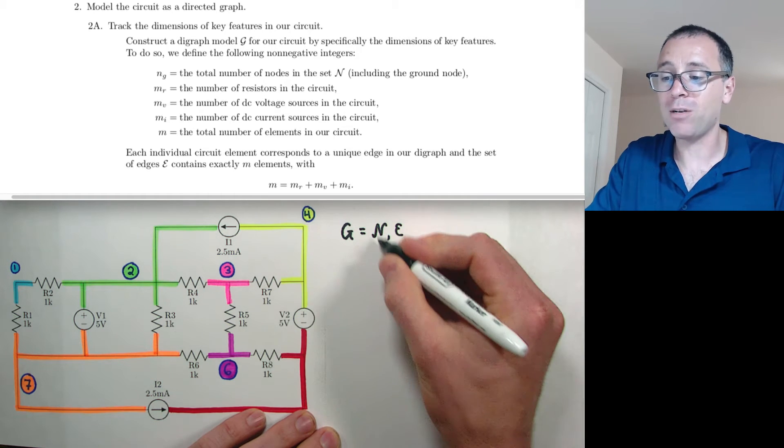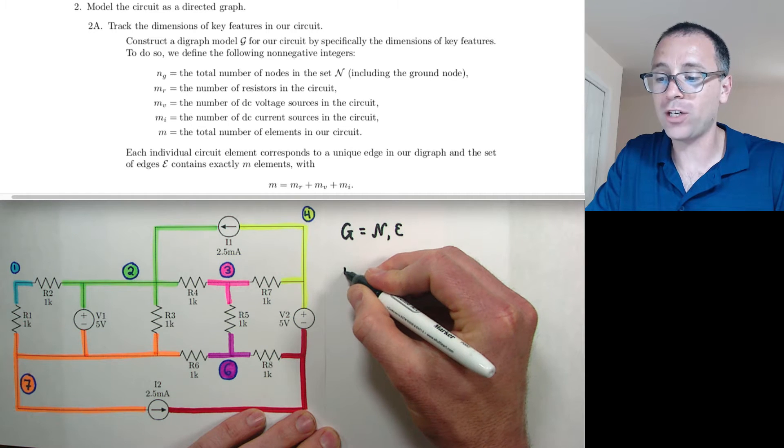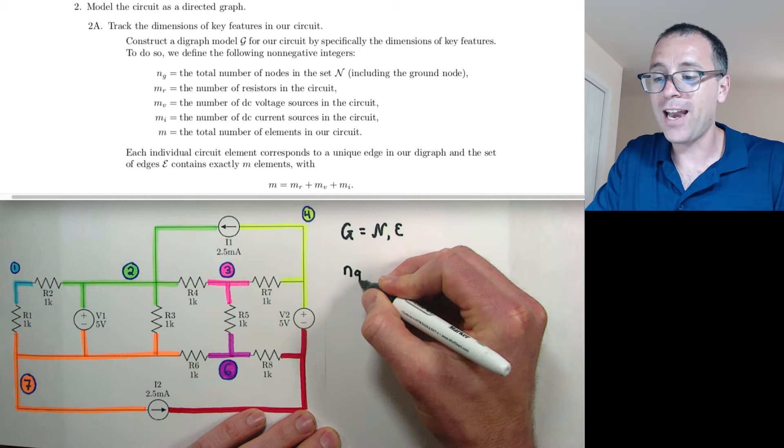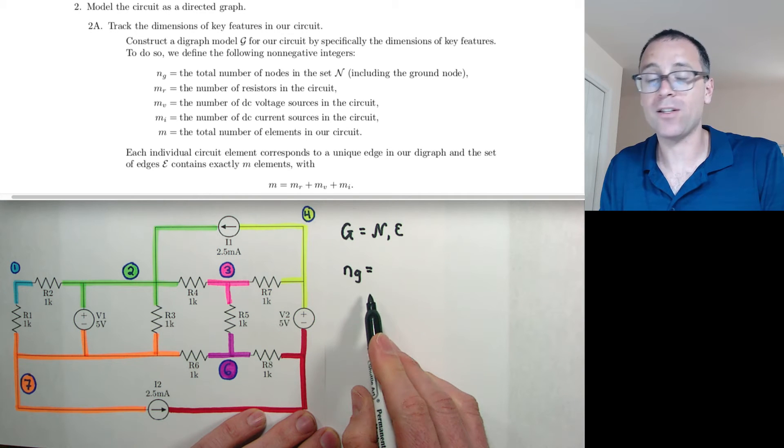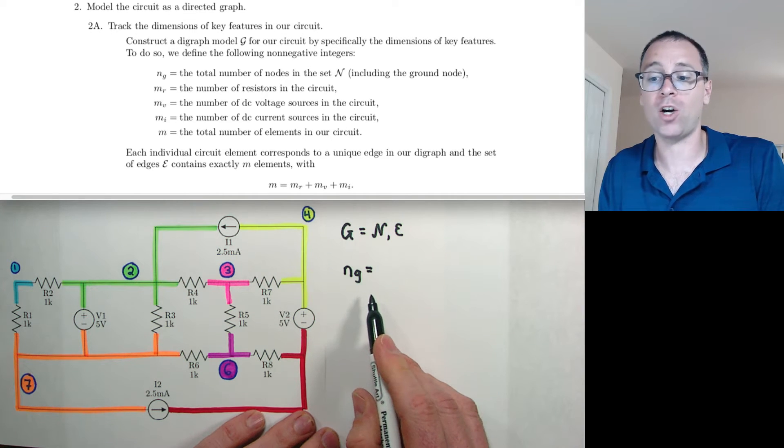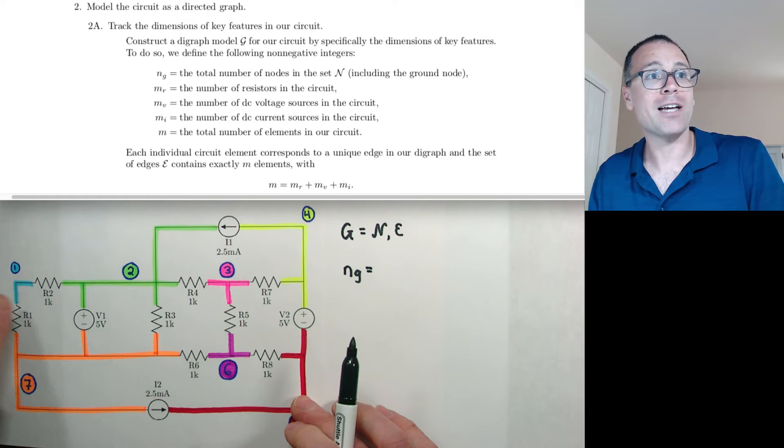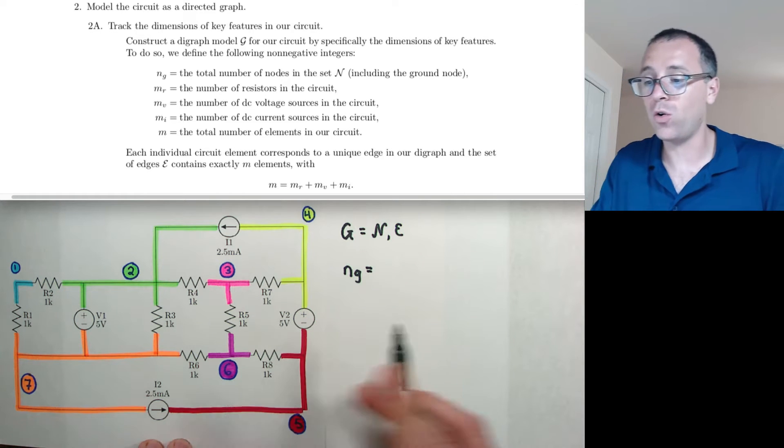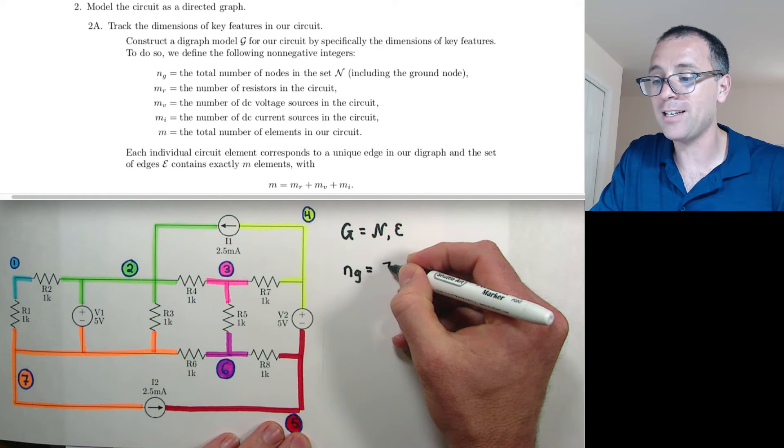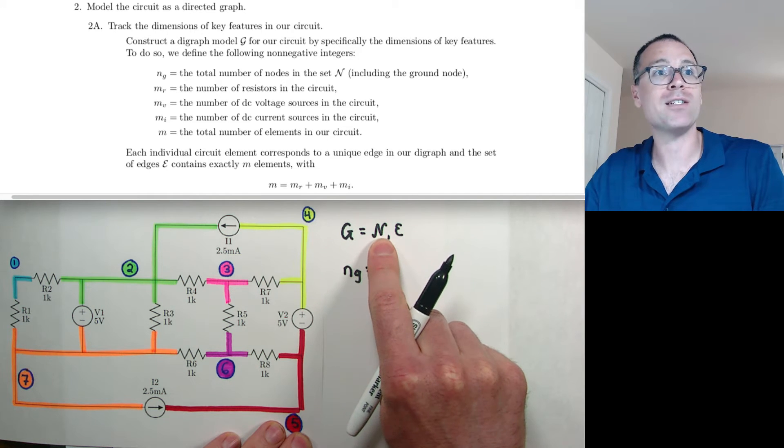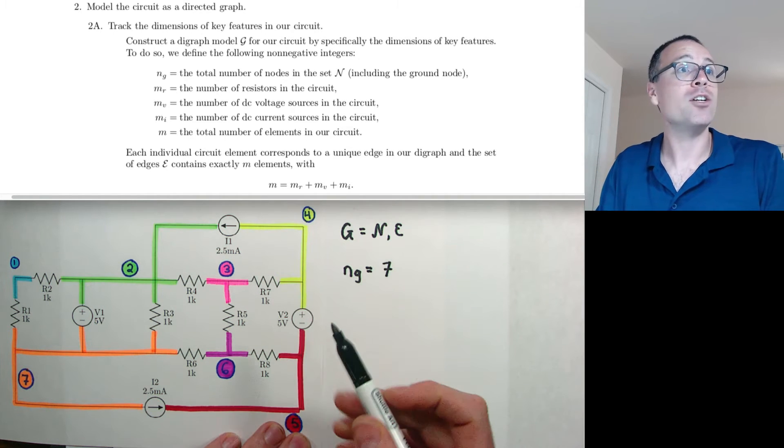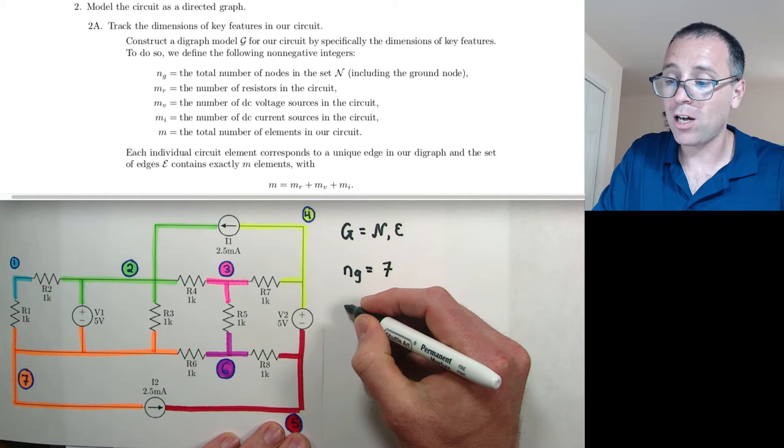Let's start with the first one, which is to track the dimensions of key features in our circuit. Based on the guide here, we're going to create this thing called the directed graph, and we're going to write it in calligraphy script. Each directed graph consists of a set of nodes and a set of edges. We see that N sub G is going to be the number of nodes in the circuit, including later what we're going to call the ground node. We just saw in the last video that there are seven nodes in the circuit, so that means N sub G is equal to seven.